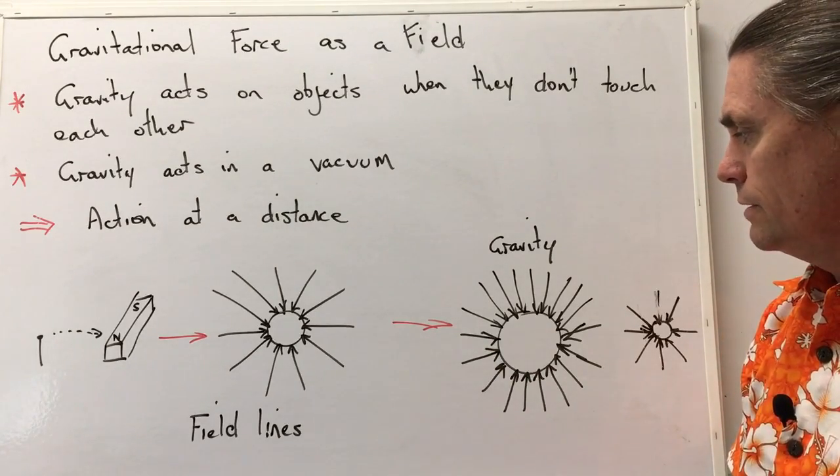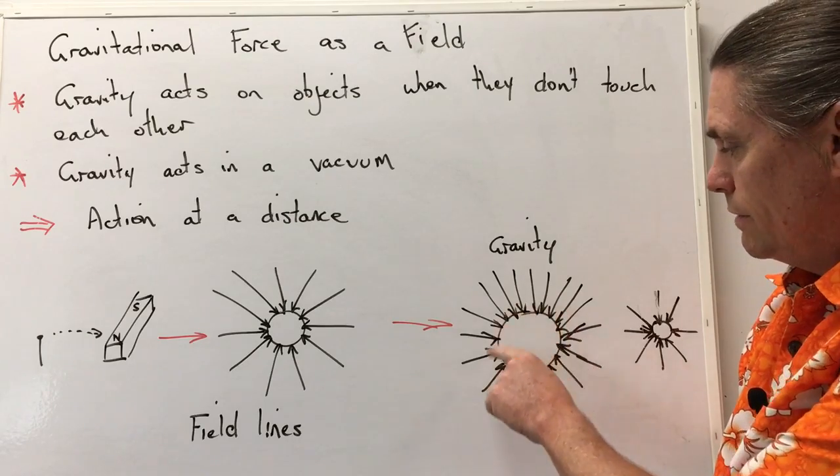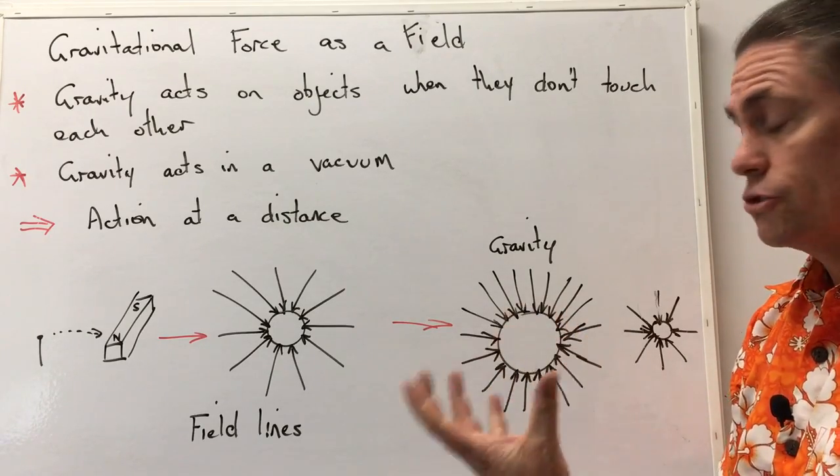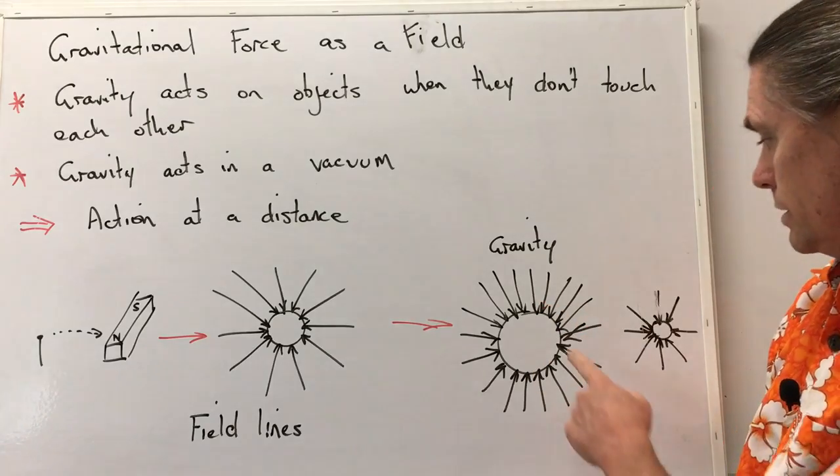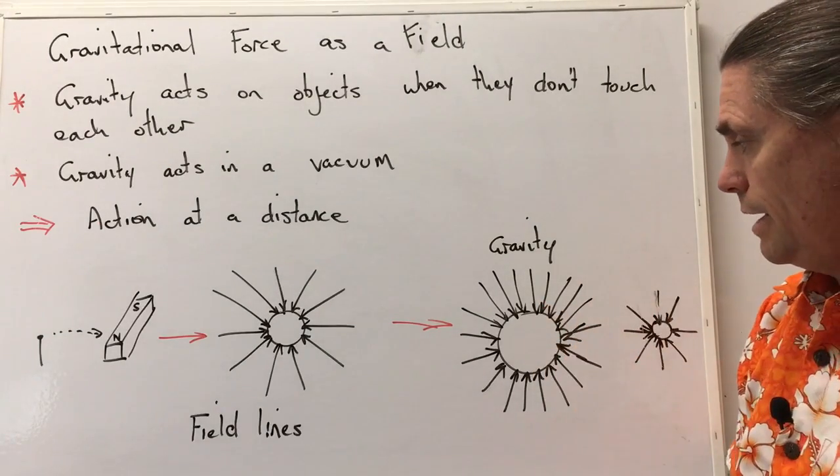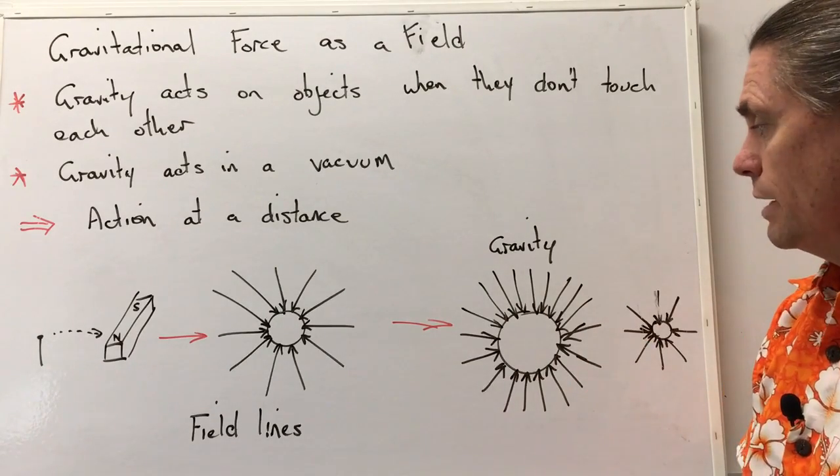We can represent the force of gravity on Earth as much stronger by first of all having more lines in there, and we see the difference between the Earth and the Moon. So a lot more field lines means a stronger field.